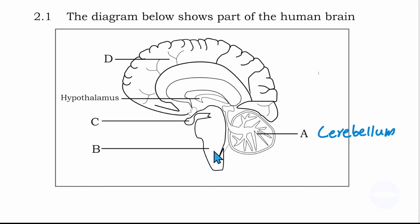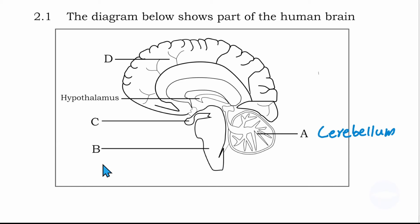Number B is the medulla oblongata. That is where the spinal cord is joining the brain. So number B is the medulla oblongata.